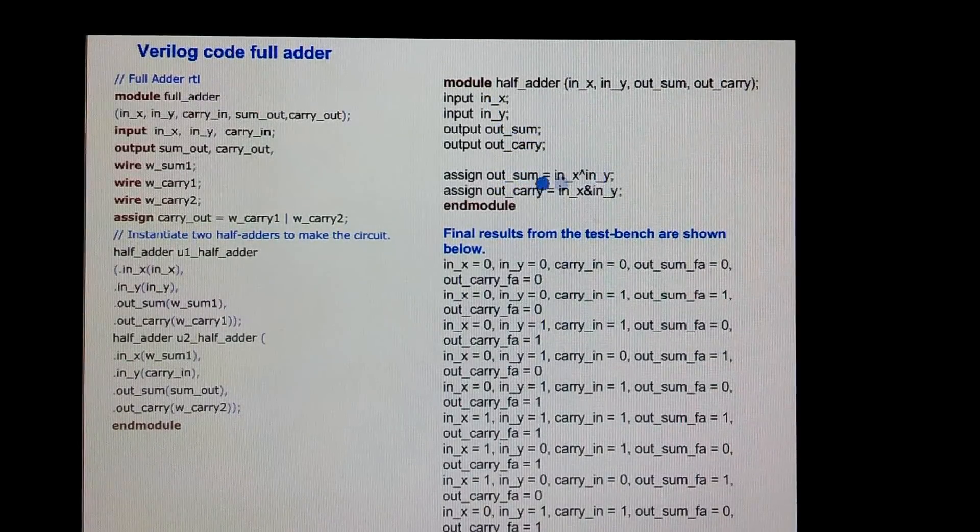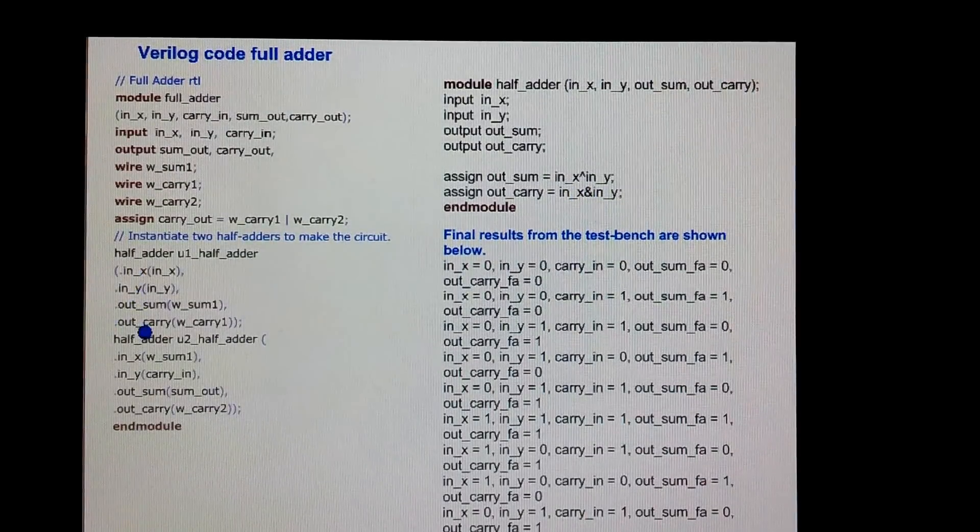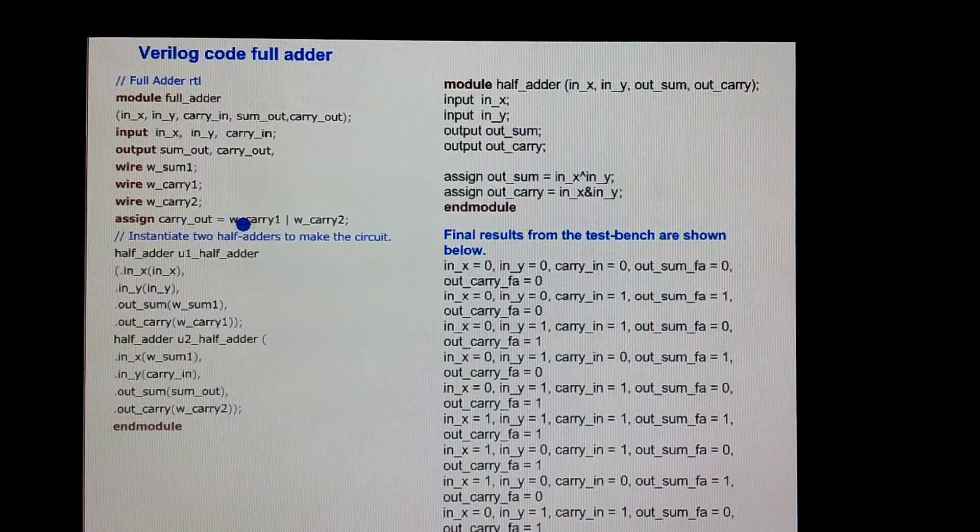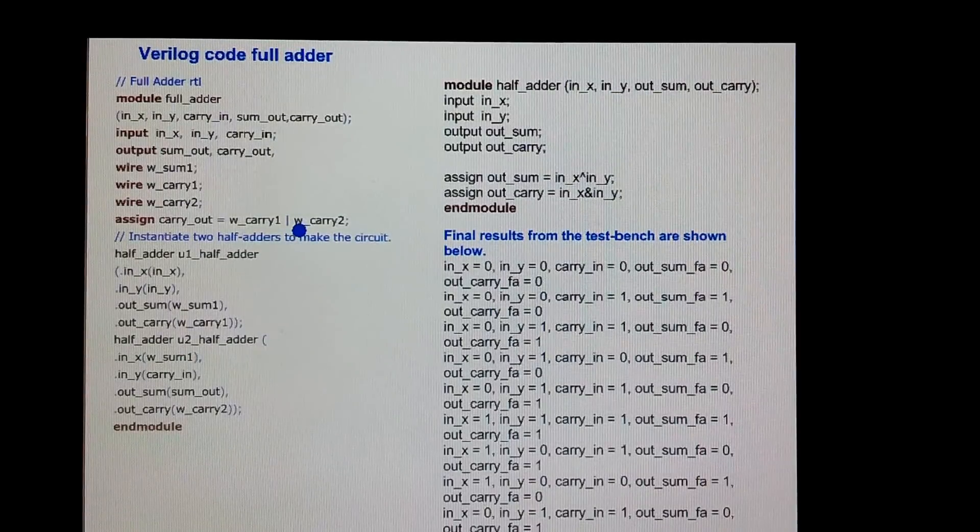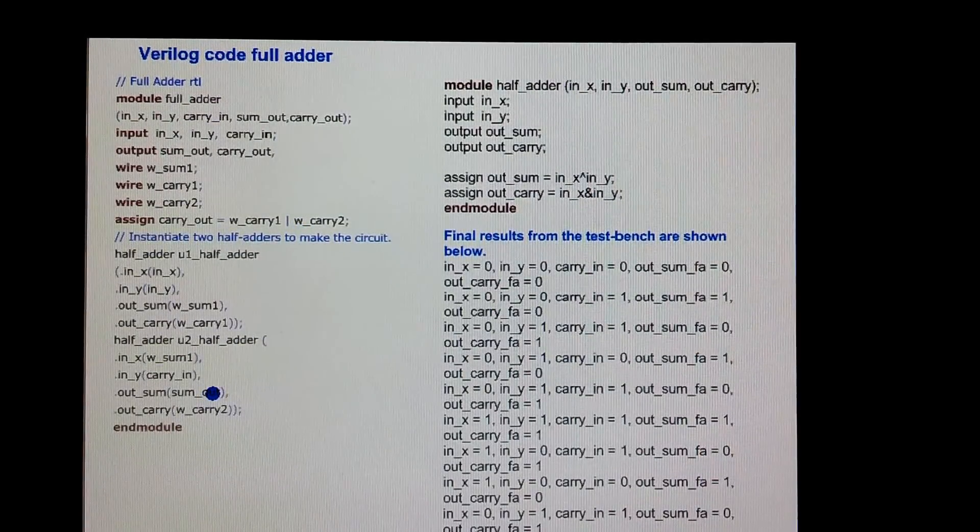The sum is an XOR of two inputs and the carry is an AND of two inputs. We instantiate two half adders here and generate the carries. The sum is the output of the second half adder.